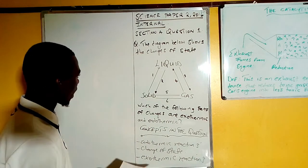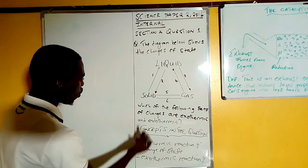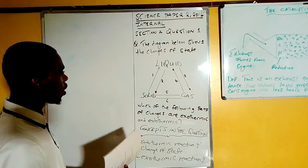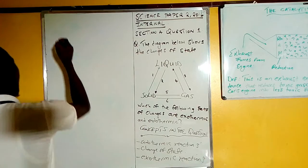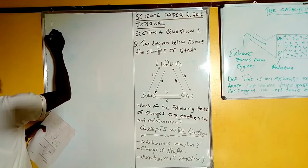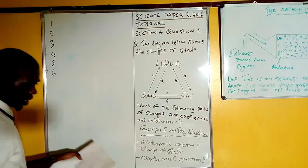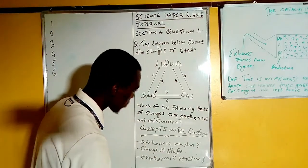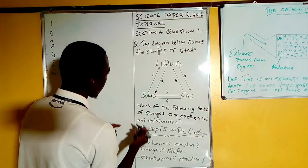The aspect of changes of states of matter, I'm sure you remember them. So now here they are asking us which of the following sets of changes are exothermic. Let's just categorize them. We have 1, 2, 3, 4, 5, 6.